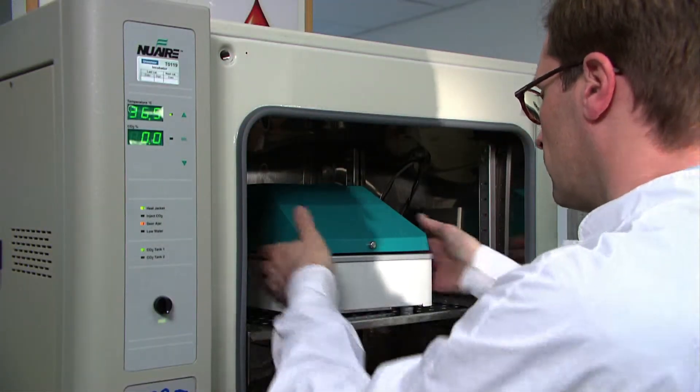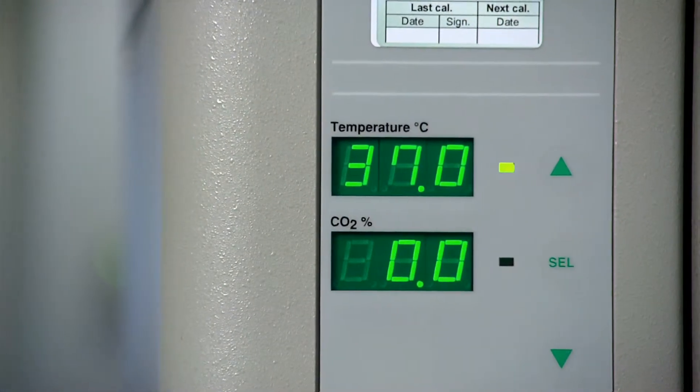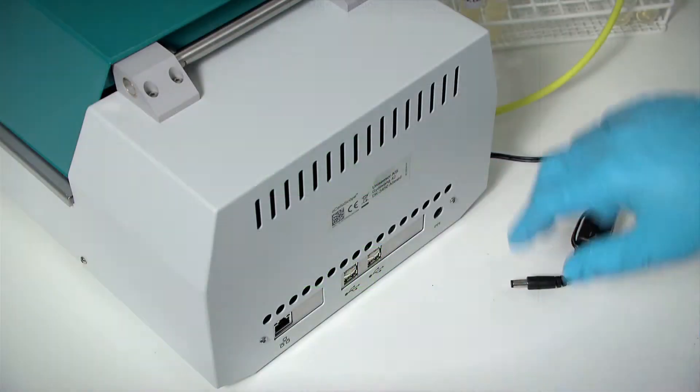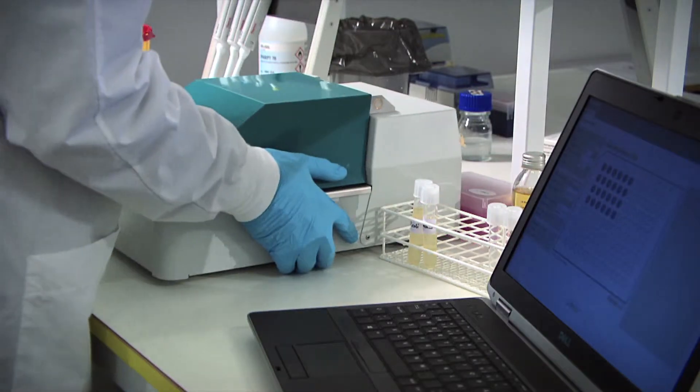Ocelloscope can be placed in a standard incubator if, for example, measurements at 37 degrees Celsius are required. This video shows how to use Ocelloscope to measure bacterial growth in a monoculture.